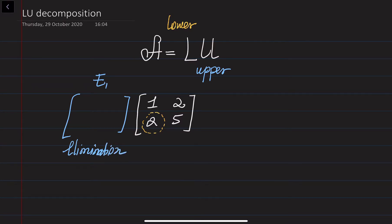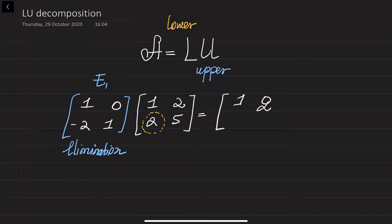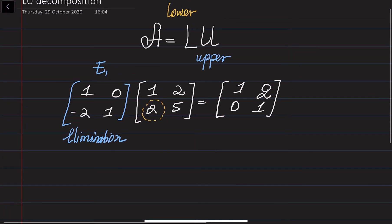The elimination matrix E1 is [1, 0, -2, 1]. Essentially, you multiply the first row by minus 2 and add it to the second one. If you do this, what you get is [1, 2, 0, 1]. This matrix is already in row echelon form, so we don't need to continue. Note that this result is the upper triangular matrix, and this elementary matrix on the left-hand side is the lower triangular matrix.